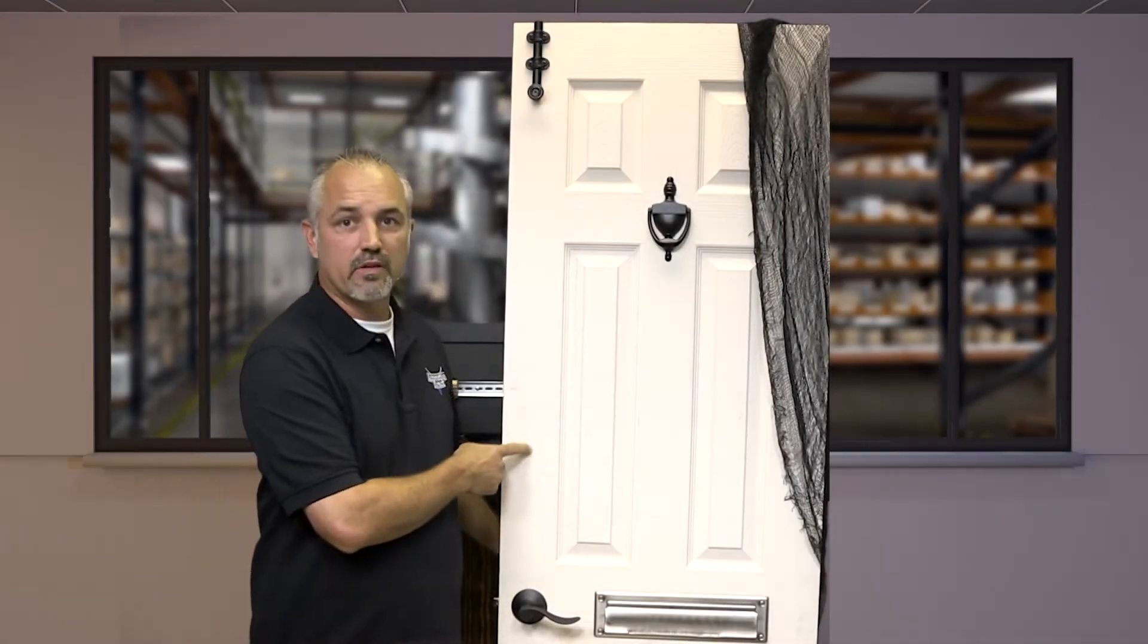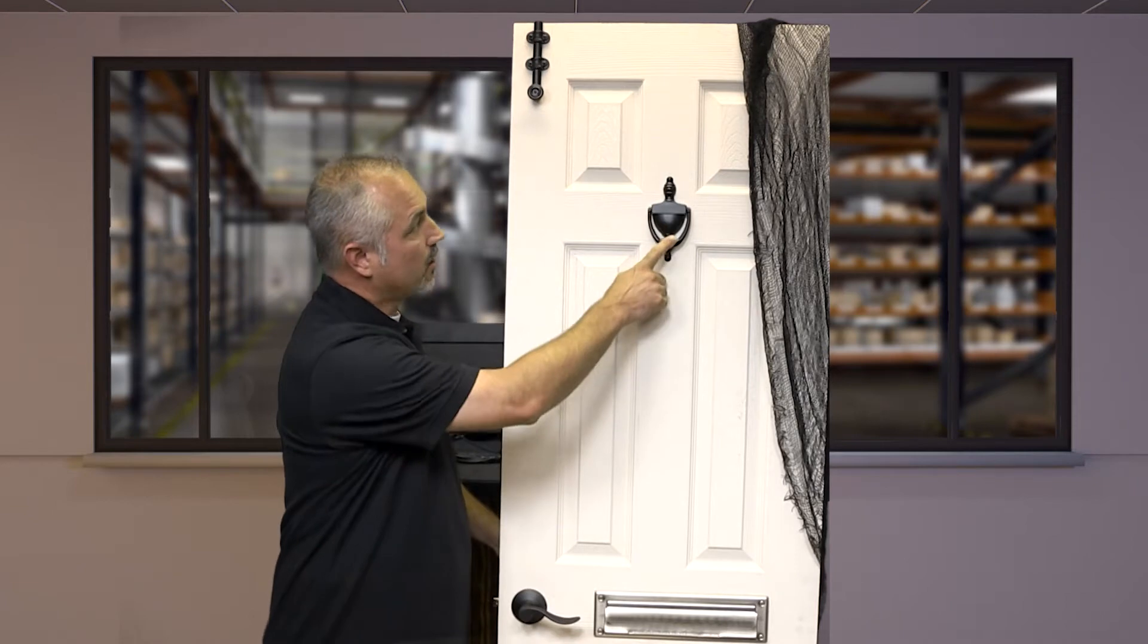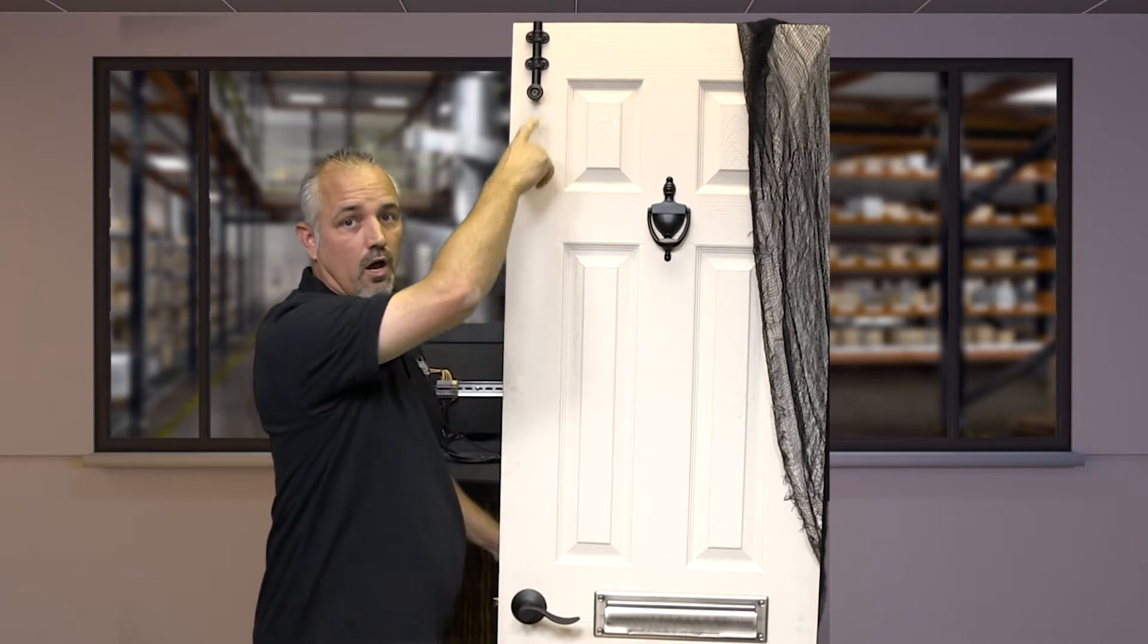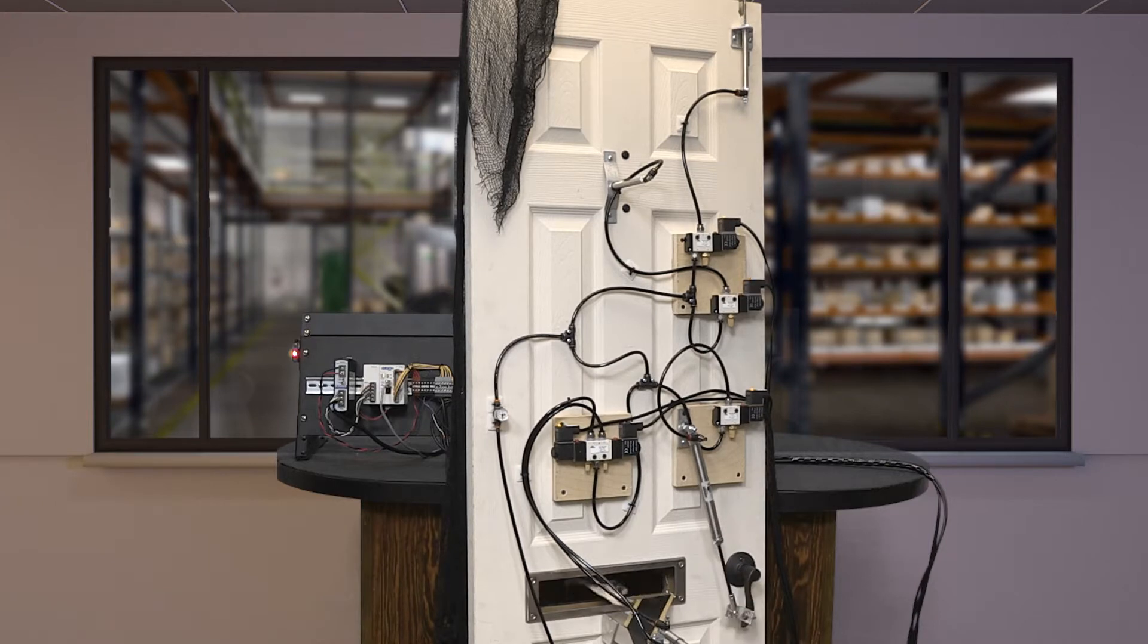We purchased an inexpensive door at the local big box shop as well as a door knob, mail slot door, knocker, and a sliding door lock. The back of the door reveals how we control each piece of hardware. We use pneumatic valves once again because they are inexpensive, low cost, and pneumatics are clean.